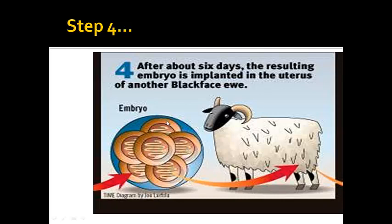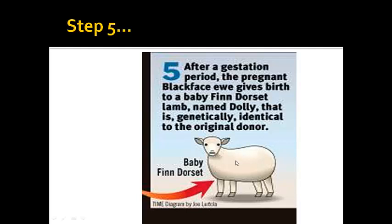Once they had a developing embryo that was going through mitosis correctly and looked somewhat normal, they then put that embryo into a third sheep — into the uterus. Then a lot of things go wrong here too: miscarriages, and not many were successful in going through this process. But then one or some of them go through the full process correctly and a baby sheep is born.